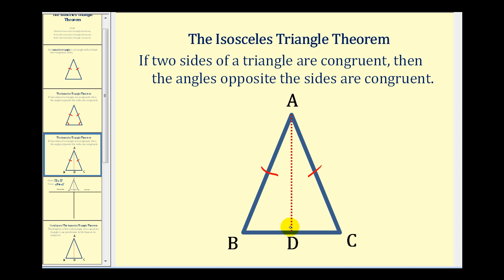We can do this because every angle has one angle bisector. So now to prove that angle B is congruent to angle C, we're going to prove that these two smaller triangles are congruent, and therefore corresponding parts would also be congruent.